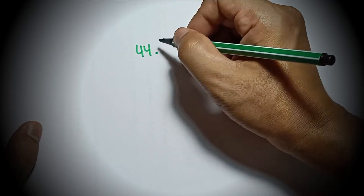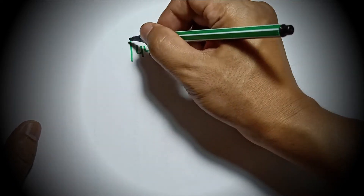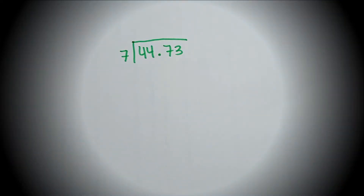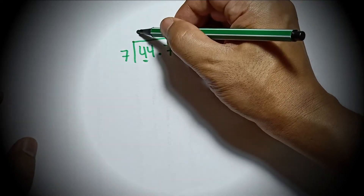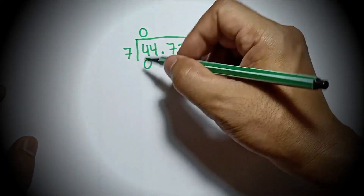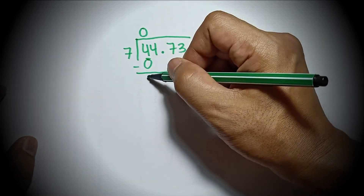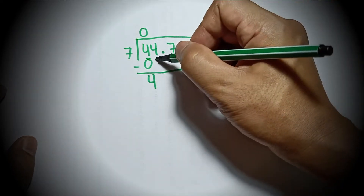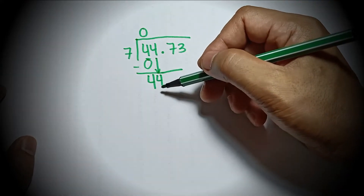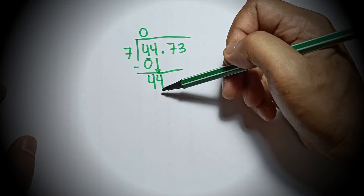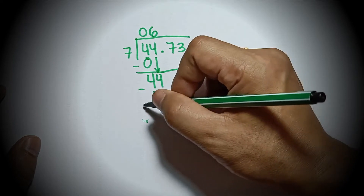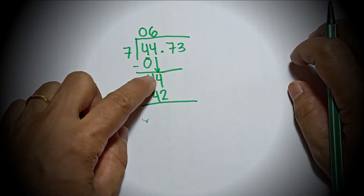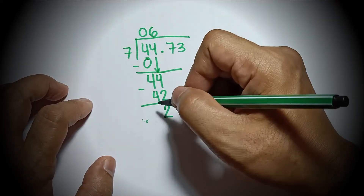Let's take the second example. If you have 44.73 divided by 7: in the first digit, can you make 7 out of 4? No, so just put 0 on top of 4. 0 times 7 is 0, then 4 minus 0 is 4. Bring down 4 so it will become 44. How many 7s can you make from 44? You can make 6. So 6 times 7 is 42. 44 minus 42: 4 minus 2 is 2, and 4 minus 4 is 0.